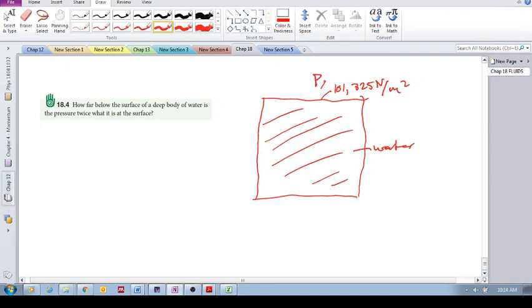If you look at the previous example, they showed that the pressure of air at sea level is 101,325 Newtons per meter squared. That's the pressure of atmosphere. So how are we going to solve this problem with what we've learned so far?